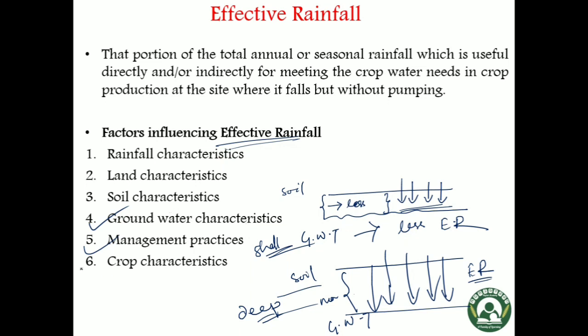Coming to crop characteristics, crops which require a higher amount of water — that is, crops with high water requirement — have higher effective rainfall than crops with low water requirement. Because if water requirement is high, the crop will need more rainfall for its requirement, so in that case effective rainfall will be higher.